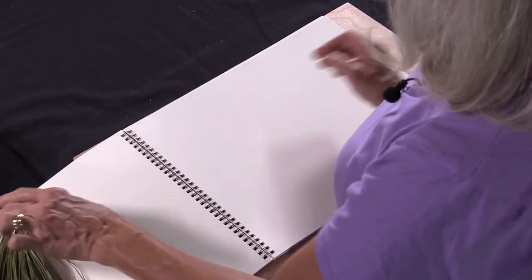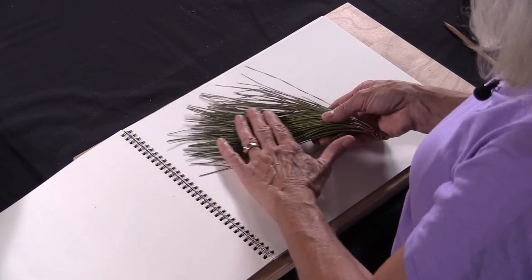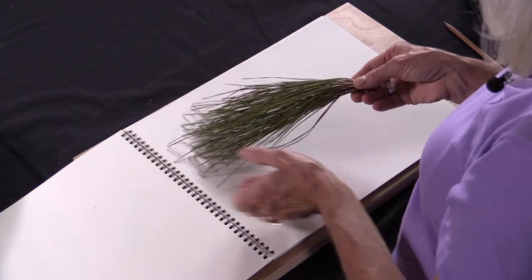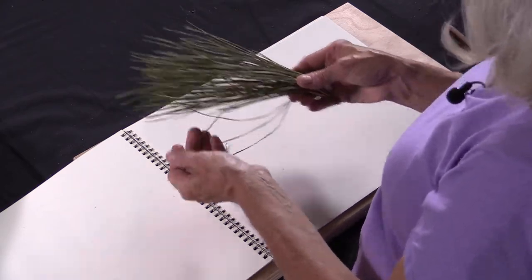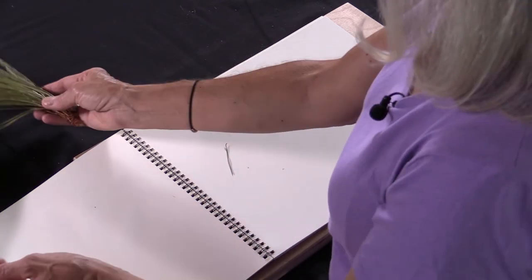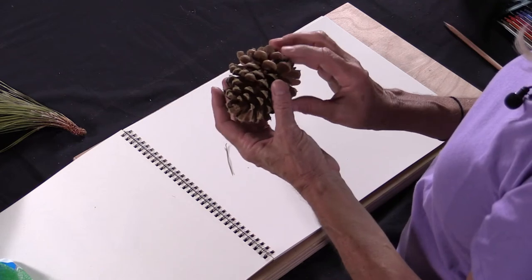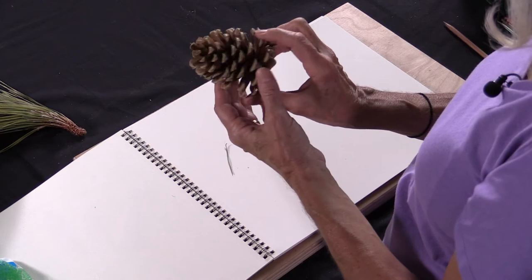I wanted to show you a few things I have here in the studio that have texture. When I talk about texture, I mean the way things feel and look. This is something you could probably guess what it is—a pine bough. And not far away from a pine bough would be this pine cone. It's kind of prickly, actually very sharp, but it has a texture.